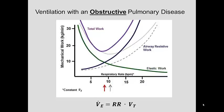The total work experiences a leftward and upward shift, indicating that in order to minimize the total work needed to ventilate, it would be advantageous to ventilate with a lower respiratory rate and a larger tidal volume.